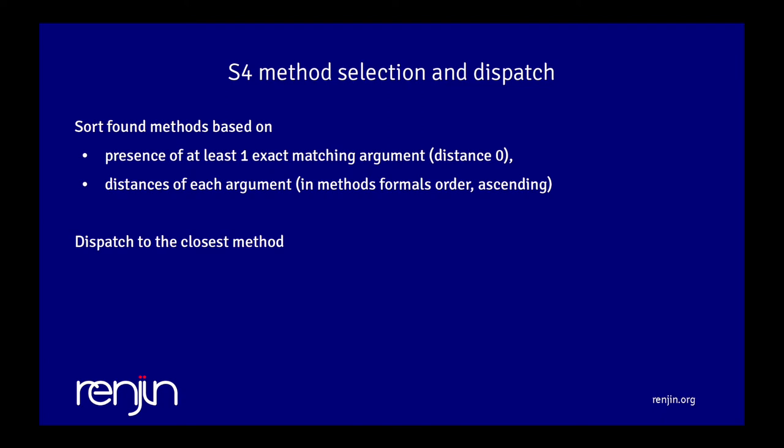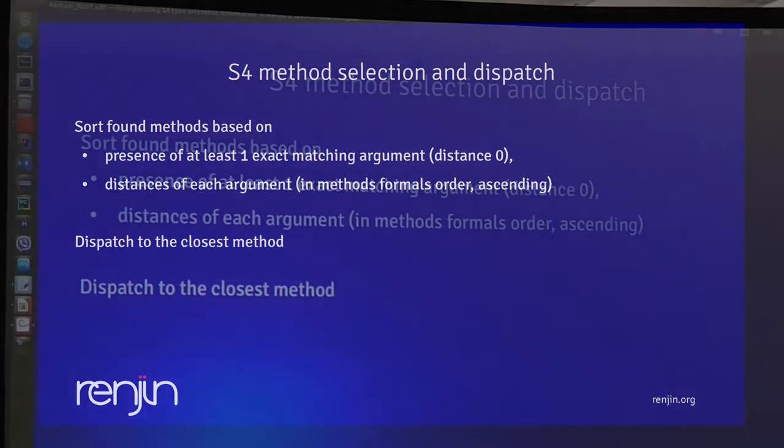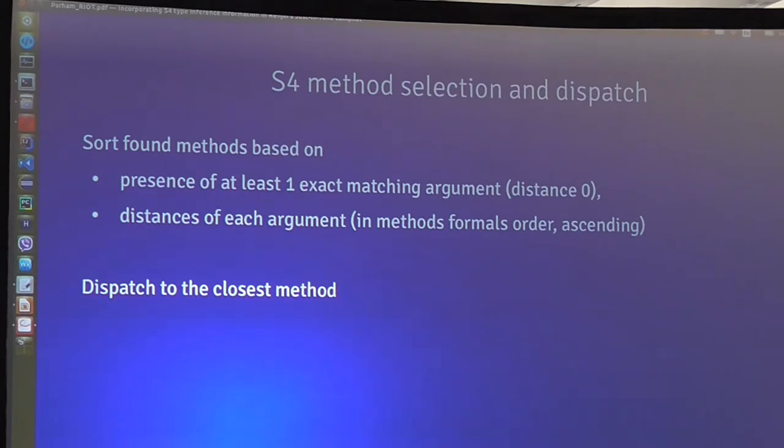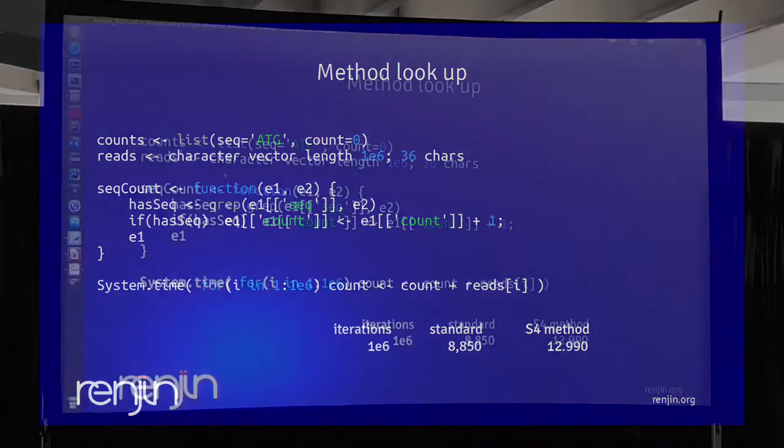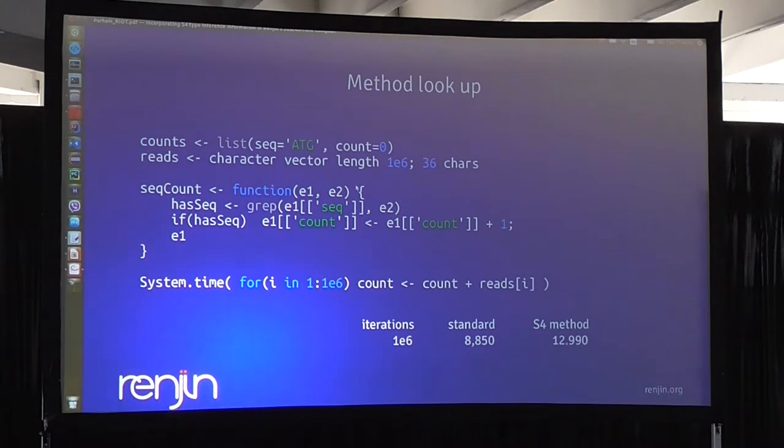The sorting happens based on whether there is an exact match. If there is an exact match, then the methods with one exact match have a priority, and then they are sorted based on the distance of each argument consecutively. Then there will be a dispatch to the closest method. But all this method signature generation, lookup and selection comes with a computational price.